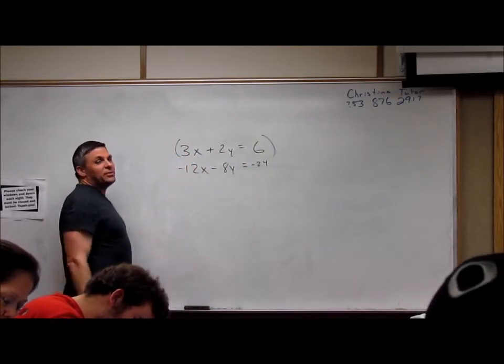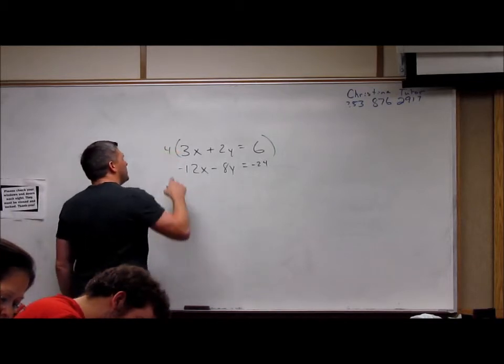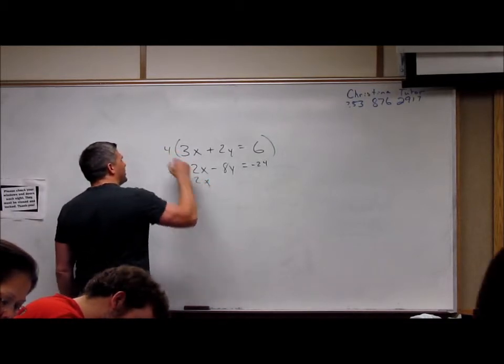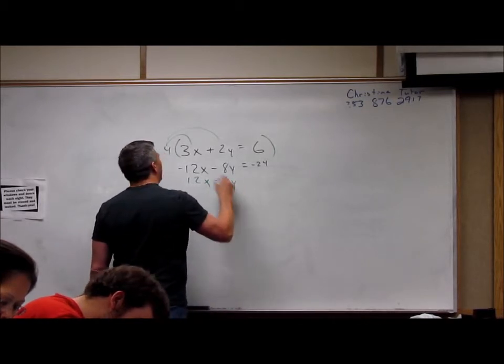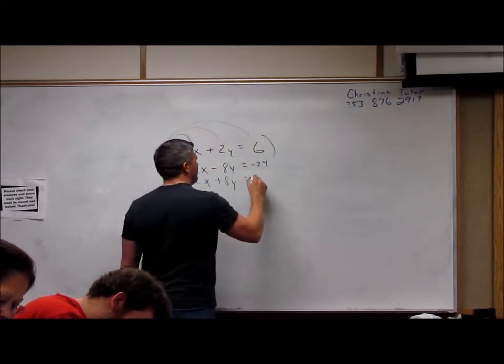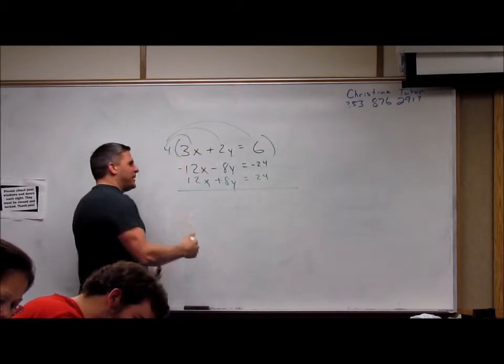So get rid of the first one. I want to make a 3 of 12 and we make it opposite. So 4 times 3 is 12x, 4 times 2 is 8y, and 4 times 6 is 24.